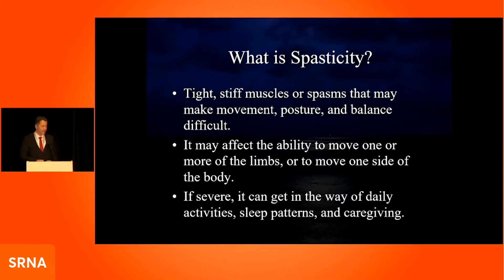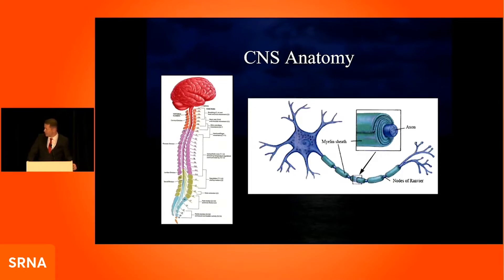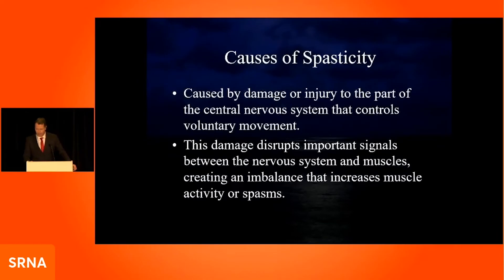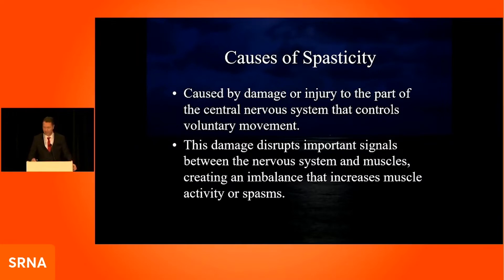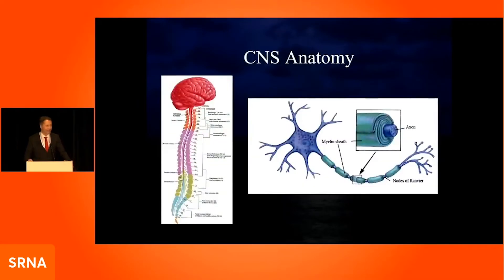The central nervous system is essentially where spasticity takes place. On the top left you see the brain, and as you go down to the spinal cord, spasticity is generally caused by dysfunction within the spinal cord. We usually say spasticity is an injury to the corticospinal tracts, though most people don't really know what that means.